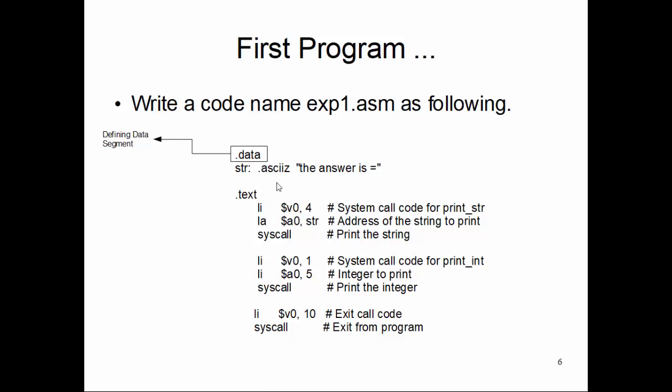Under the data segment, I am defining a memory location containing a string called 'the answer is =' which is using a .asciz directive. This .asciz has been explained in my last lecture. We are laying down this string in the memory and calling or naming the start of the string as 'str'—start of the string in memory. We can say 'str' is my string name.